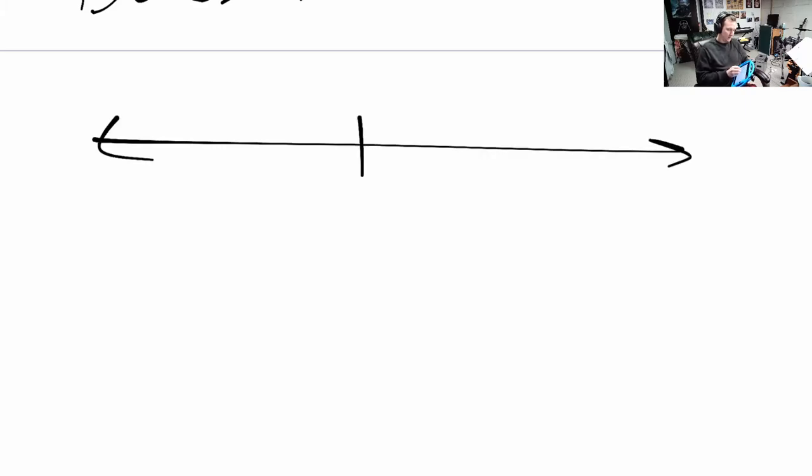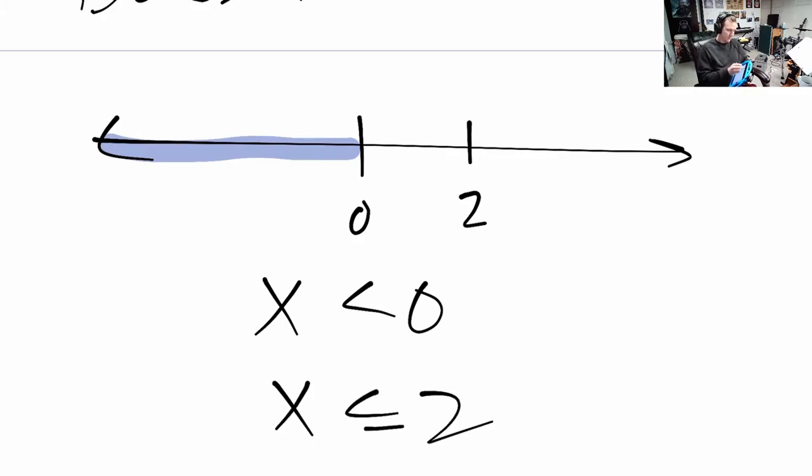Here's 0, here's 2. x < 0 is these numbers. x ≤ 2 is these numbers. We have to have both of these things being true because we're working in this case.